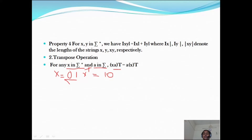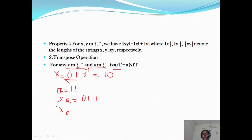This is an extension principle of concatenation — concatenation plus transpose combined. Transpose means just reverse the string. For example, x = 01 and a = 11. Then x·a = 0111, and (x·a)-transpose = 1110 — written from backward, that is 1 1 1 0.